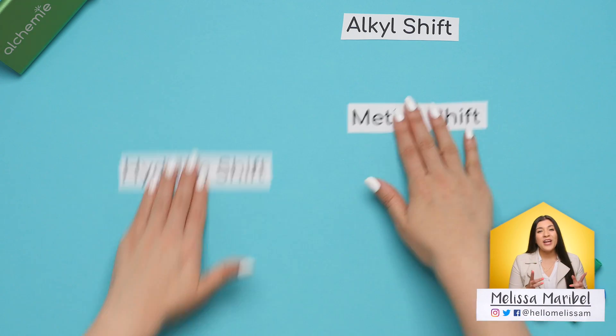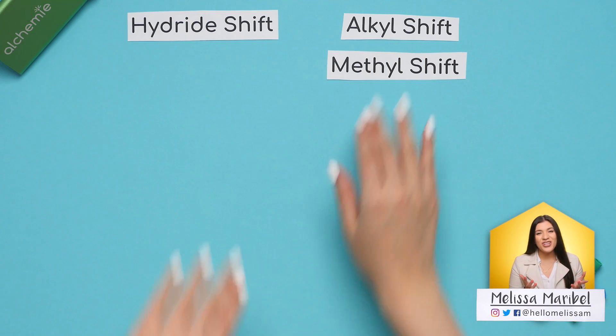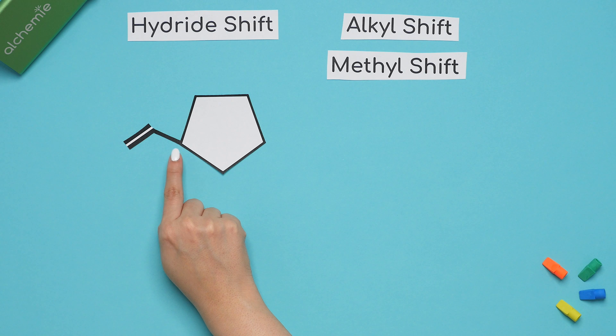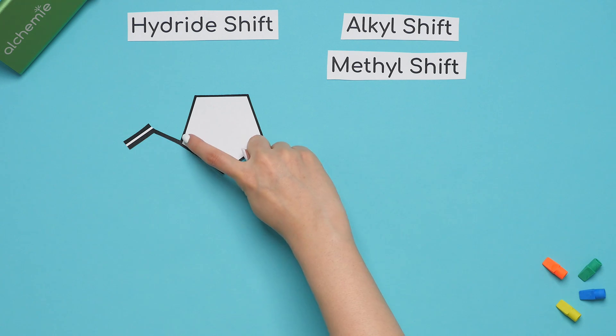Here's how you can tell when to use either shift by just looking at the initial structure. Your clue to do a hydride shift is when a double bond is next to a tertiary carbon. We know a carbon is tertiary if it is attached to three different carbons.